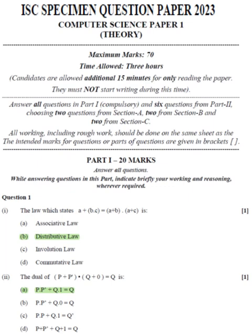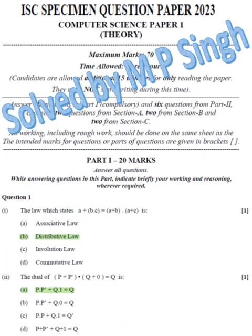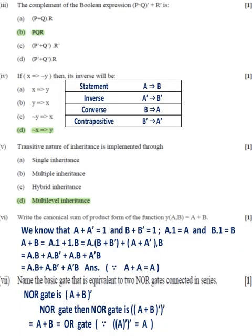ISC specimen question paper 2023 Computer Science Paper 1 Theory solution. Question 1 part 1: answer B, distributive law. Part 2: answer A, P dot P dash plus Q dot 1 equal to Q.